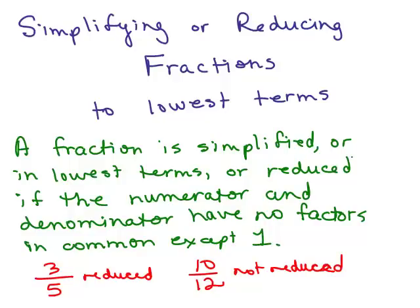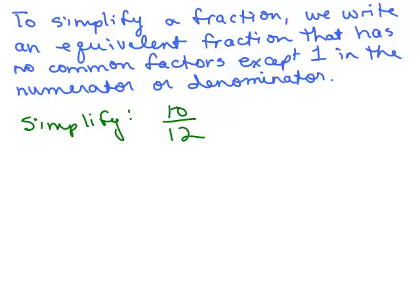So how are we going to reduce things? To simplify a fraction, we write an equivalent fraction that has no factors except one in the numerator and denominator. If you look at 10/12, we decided that 2 was a factor of both of them. So we're going to use our knowledge of equivalent fractions. I went over that in another video where you could multiply the numerator and denominator by the same number. You could also divide the numerator and denominator by the same number.